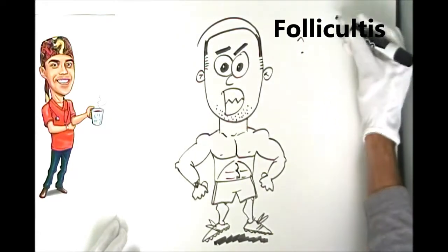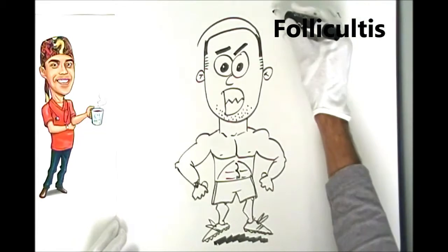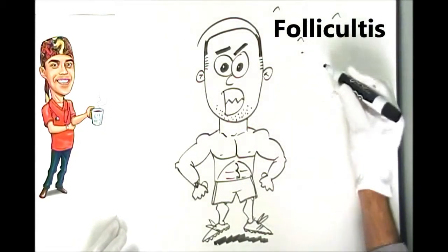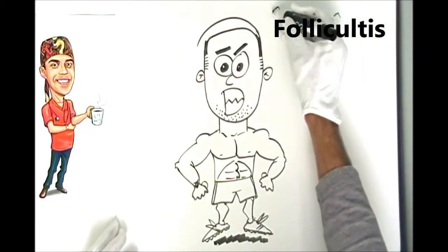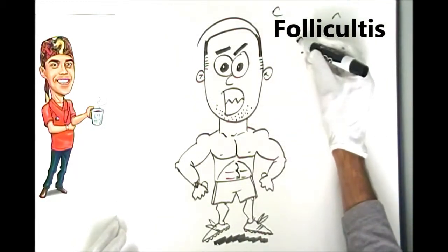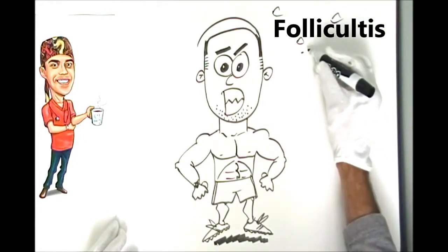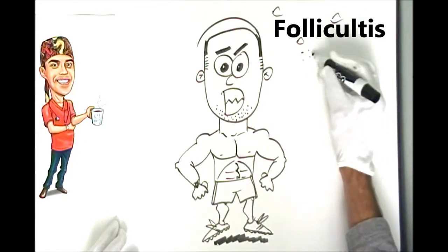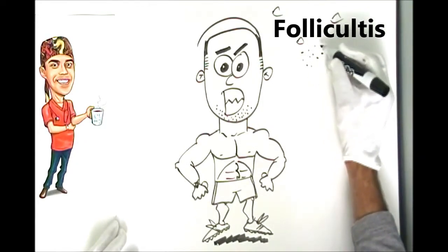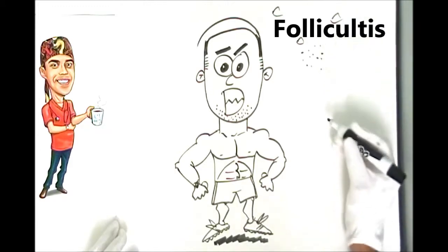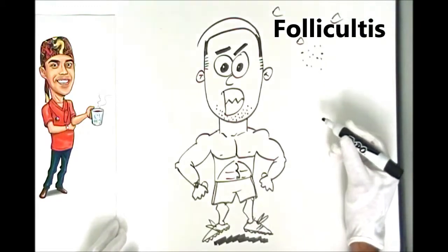The second thing is that acne also tends to be kind of widely dispersed between bumps — each one is a little bump with space between them. With folliculitis it tends to be very fine and close together, so the distribution of the rash is very dense.